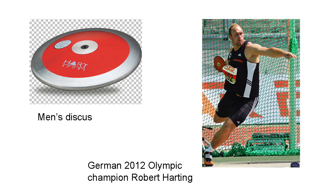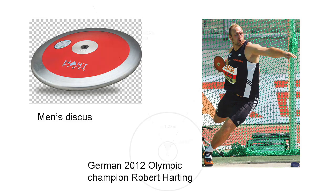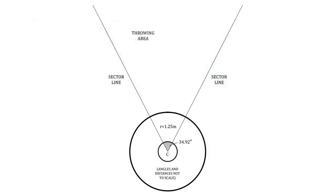Lens shaped, it tapers from a maximum thickness of 46mm in the centre to 12mm at the edge, and is made of plastic, wood, fibreglass, carbon fibre or metal, with a metal rim and a metal core. The competitor stands in a circle 2.5m in diameter, initially facing away from the direction of the throw. In the case of a right-hander, he or she then spins anti-clockwise through one and a half rotations to gain momentum before the release.